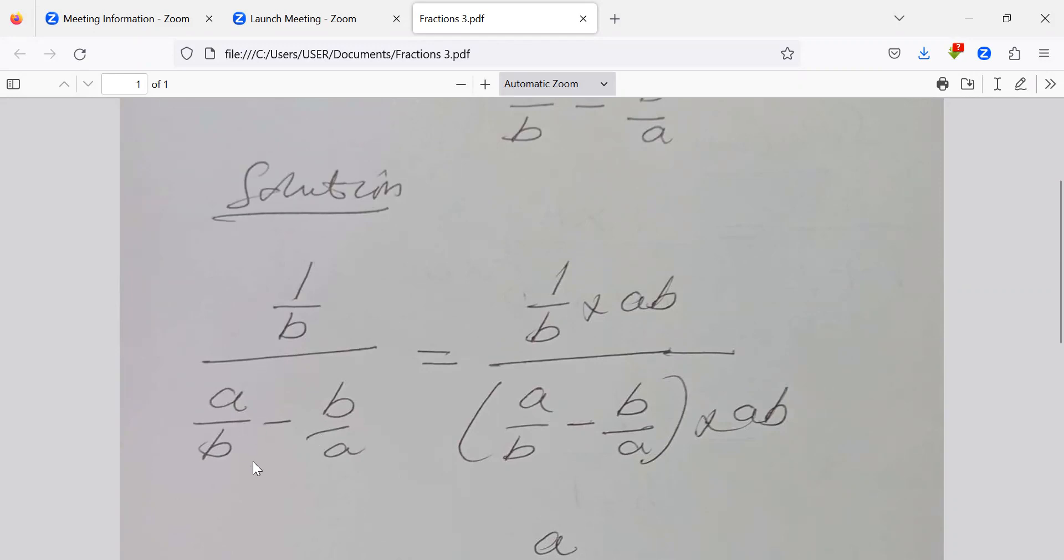Then we find a common denominator, the lowest common denominator. Over here we have a, we have b, there's another b. What we'll do is multiply the numerator by ab and the terms here by ab, and that's the next section we have over here.